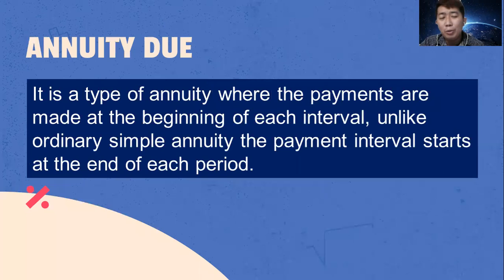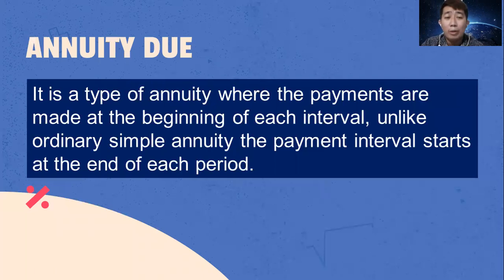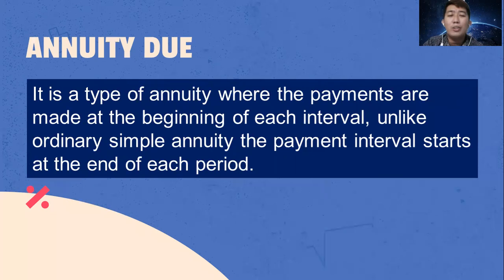What is annuity due? It is a type of annuity where the payments are made at the beginning of each interval. Unlike ordinary simple annuity, where the payment interval starts at the end of each period.